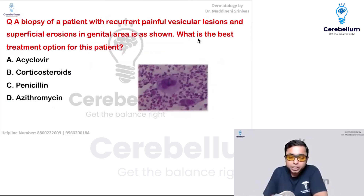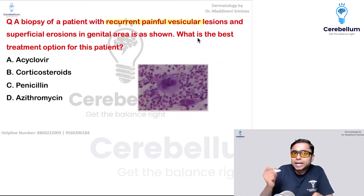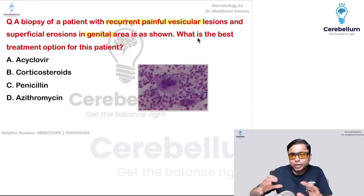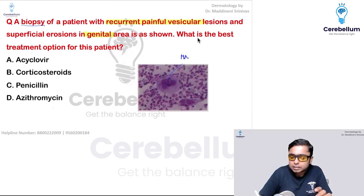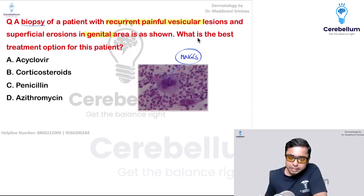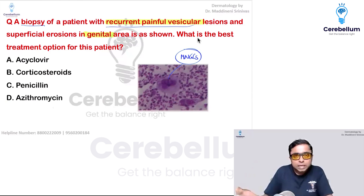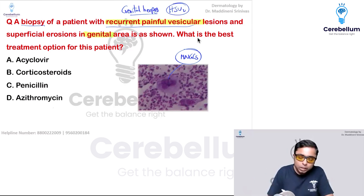The next question involves a biopsy of a patient with recurrent painful vesicular lesions and erosions in the genital area. This is a very standard repeat question. The image shows multinucleated giant cells. You need not even see the image to know the diagnosis — it is genital herpes, which is a viral infection caused by herpes simplex virus type 2. The best treatment option for this patient is acyclovir, which is option A.